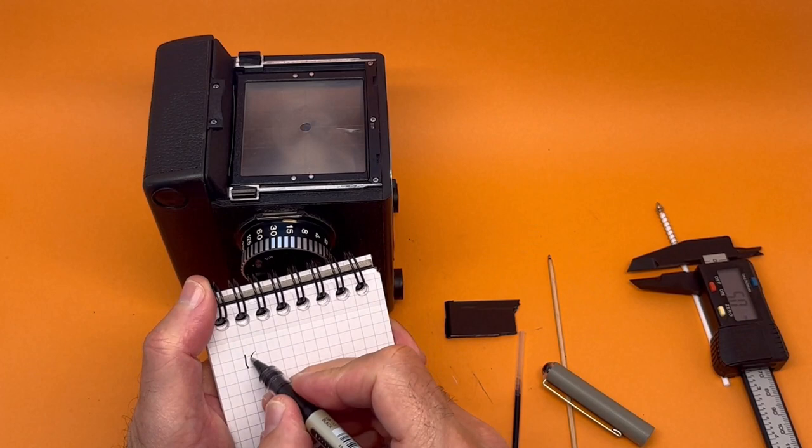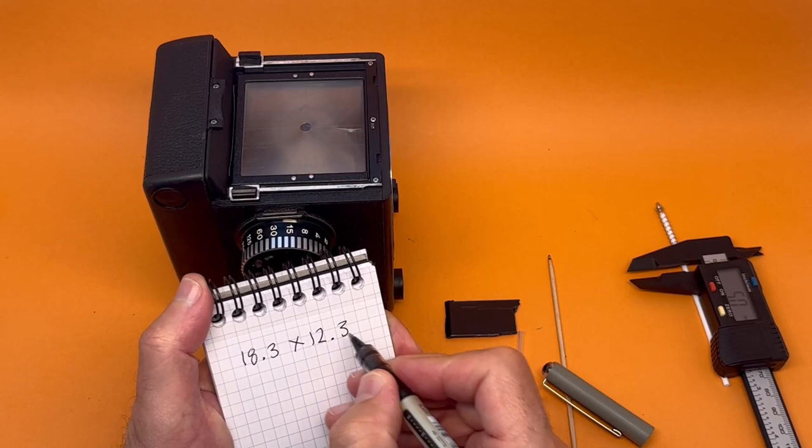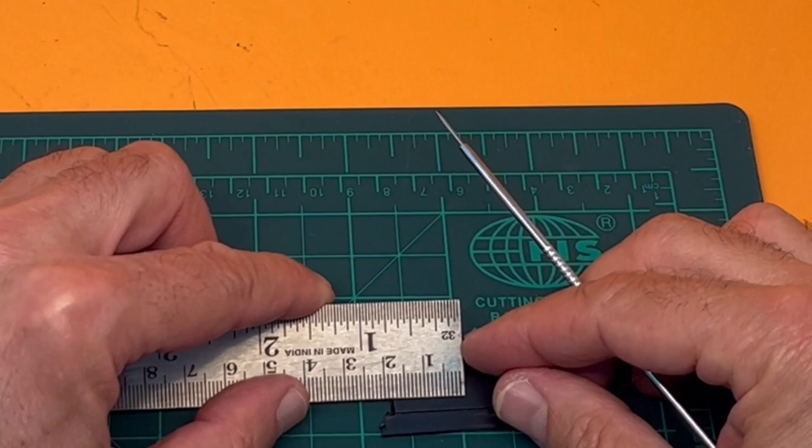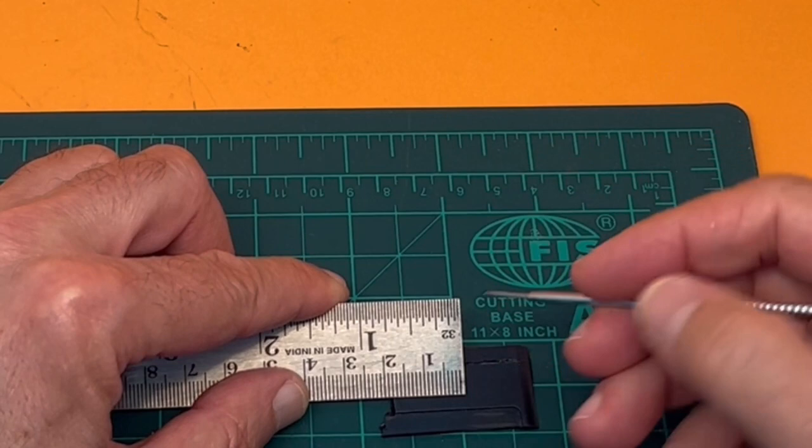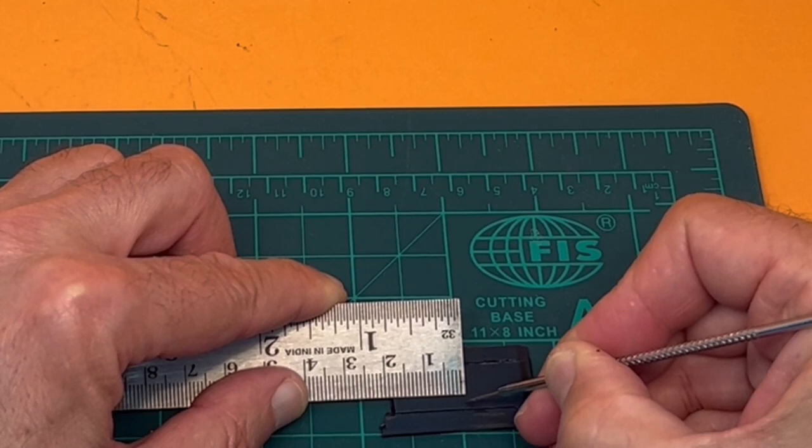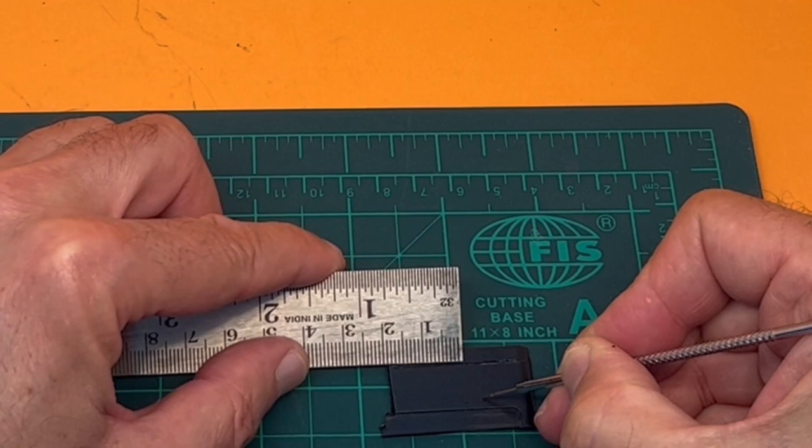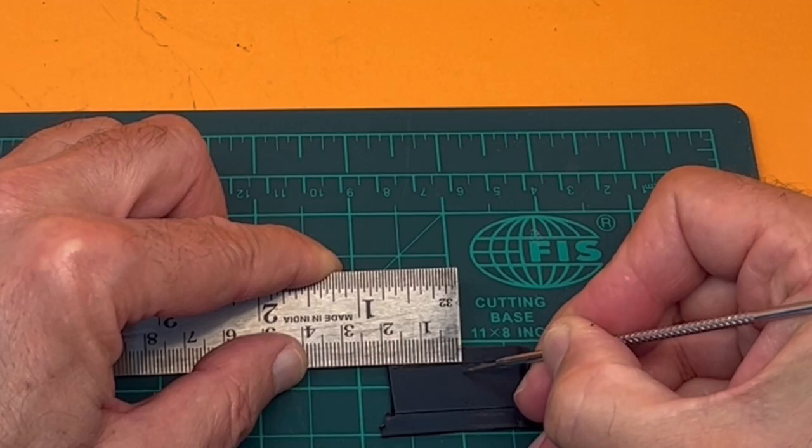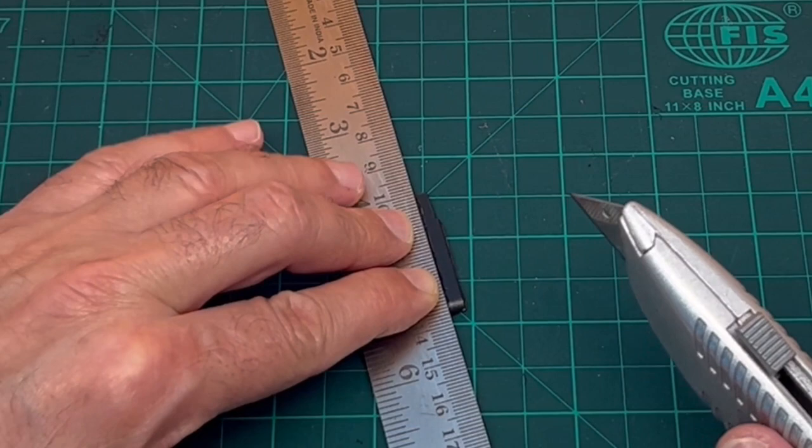So it was 18.3 times 12.3 millimeters. Don't ask me to convert to inches. So we have to mark on the plastic. Of course, pen won't work, so we'll score it like this. So we have to cut it very accurately. Mark. This is precision surgical work. Now we've marked it. We have to cut it.